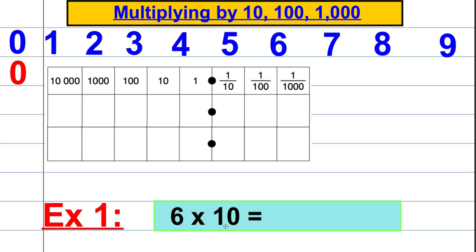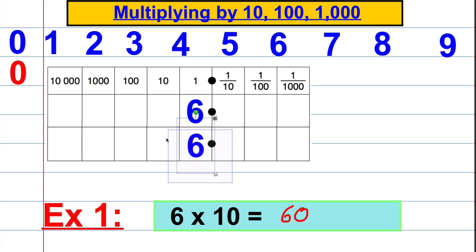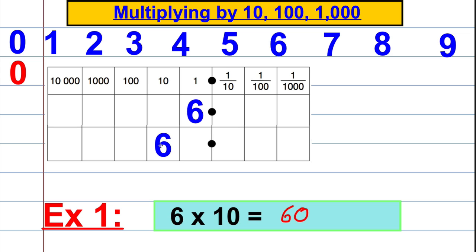Let's move on to multiplying by 10, 100 and 1,000. Our first question: 6 multiplied by 10. A lot of pupils know the answer is 60. Let's see what's going on with place value. 6 is 6 ones. The 6 in the ones column — if you multiply that by 10, you now get 6 tens, so the 6 is now in the tens column. We need a place value holder to show the number is actually 60, so we put a 0 to show there are no ones.